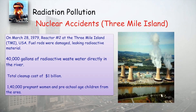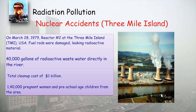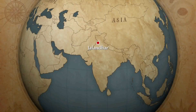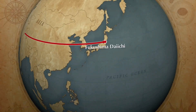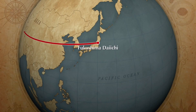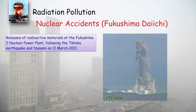The Fukushima Daiichi accident happened in 2011, where a tsunami and earthquake caused the nuclear power plant structure to break, and all the radioactive material went into the sea — another major radioactive disaster.